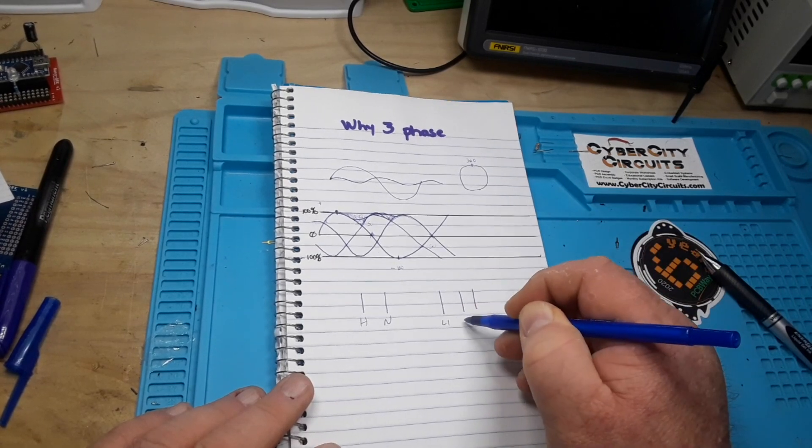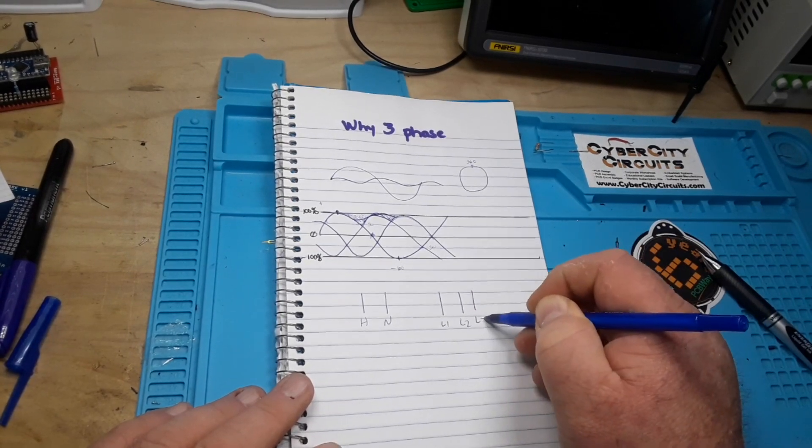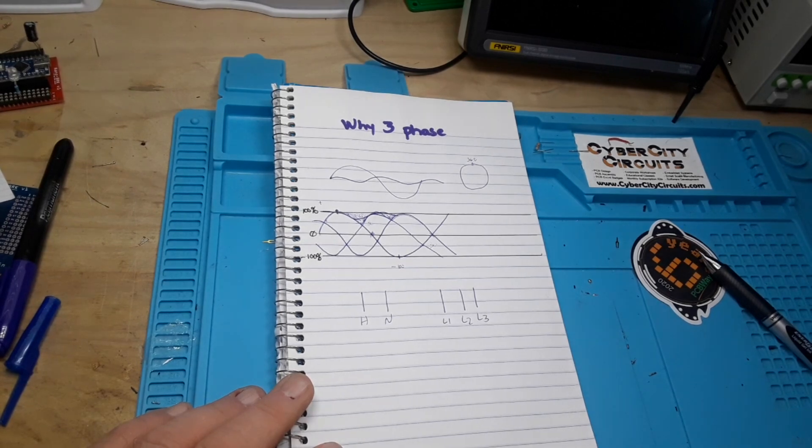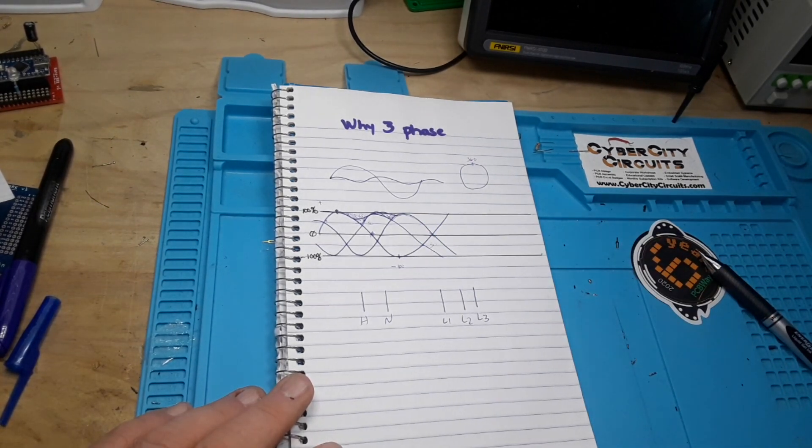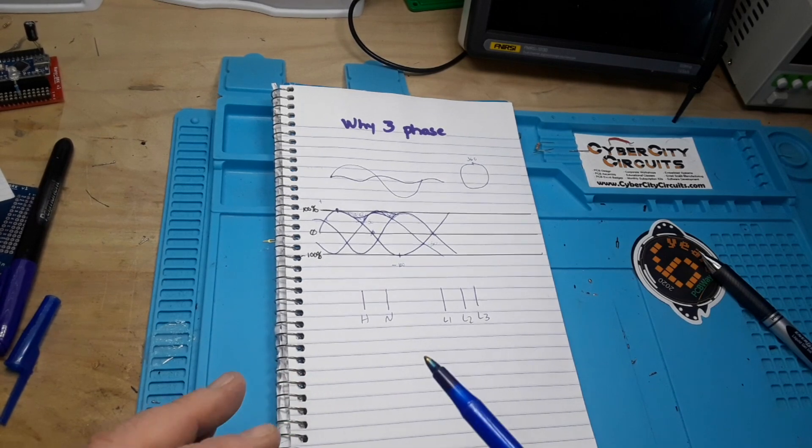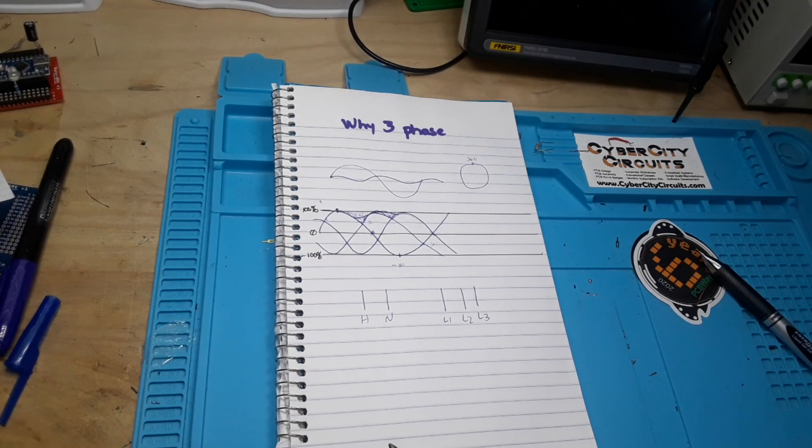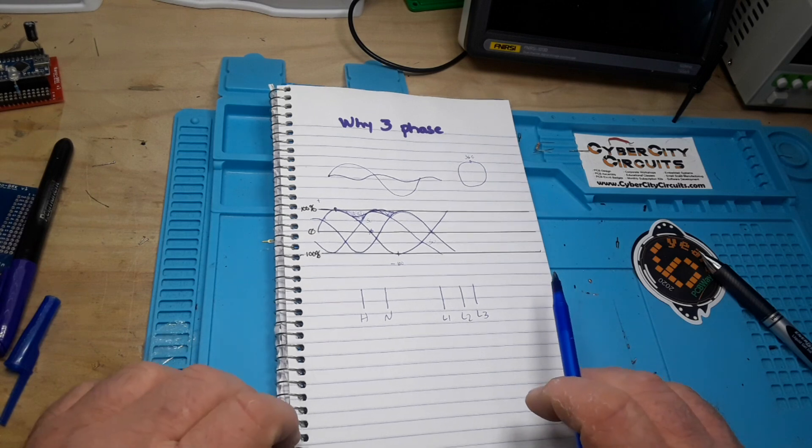You have what's called L1, L2, and L3. You've only added one more conductor, yet you've tripled the power that is available. And if you're turning large industrial motors, that is a very important thing. Now there are two different ways that three-phase power is done.